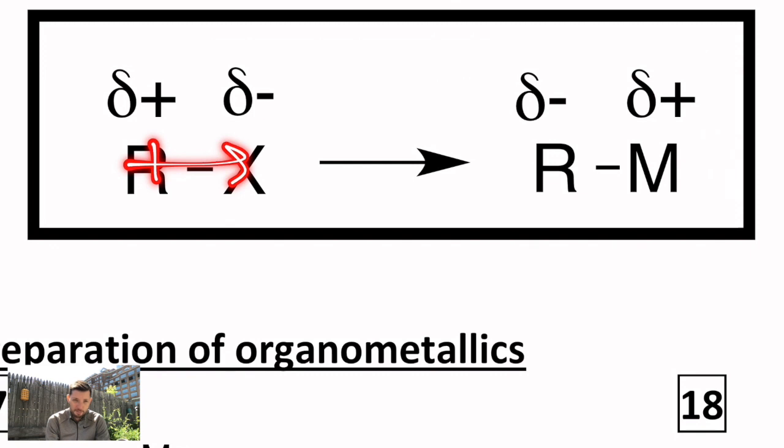But once you replace that with a metal, or sometimes insert a metal in between, it completely reverses the direction of that polarity. So you end up getting what looks like a carbon nucleophile, and that's the point of them. We're making carbon nucleophiles.